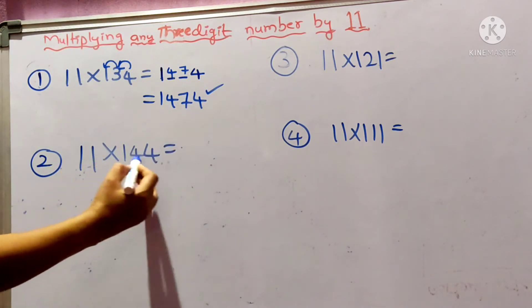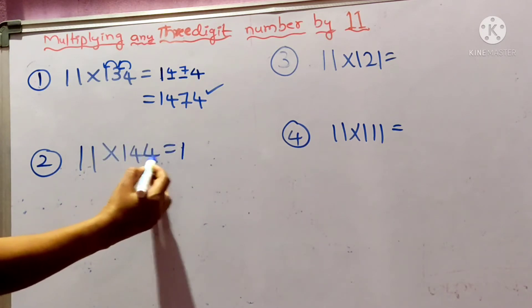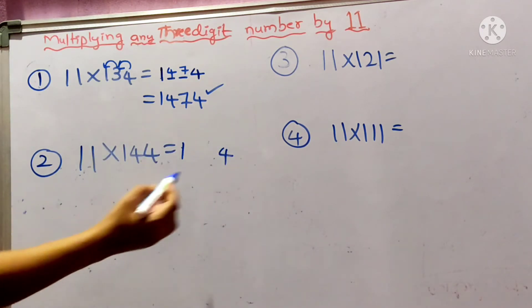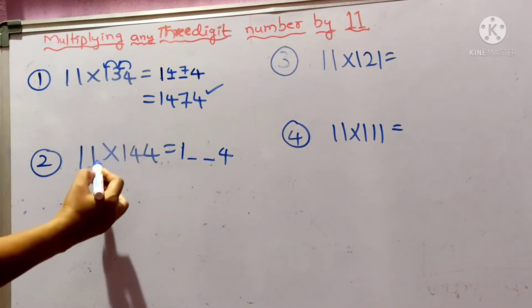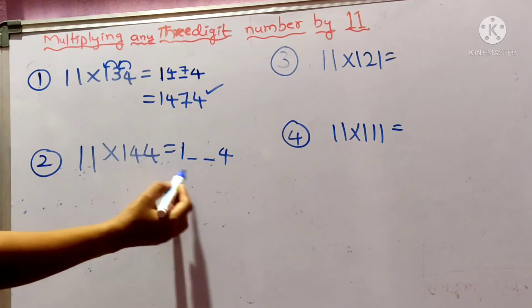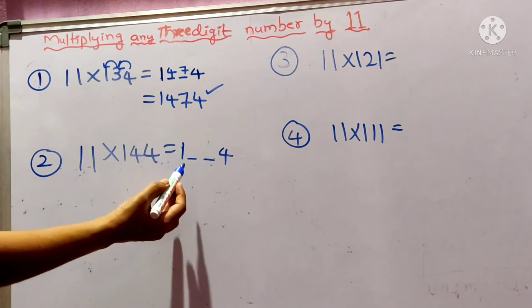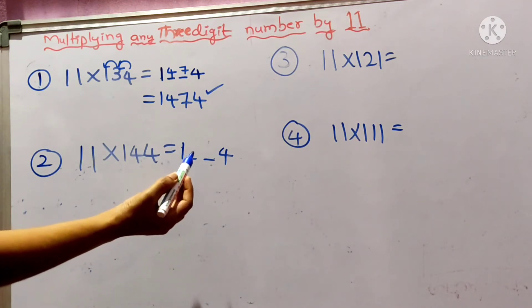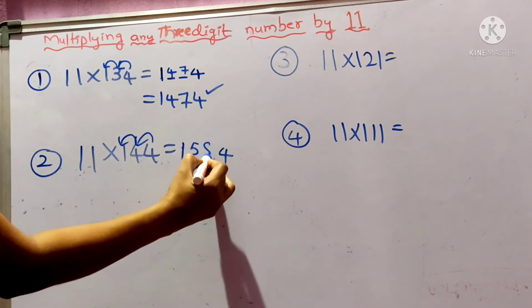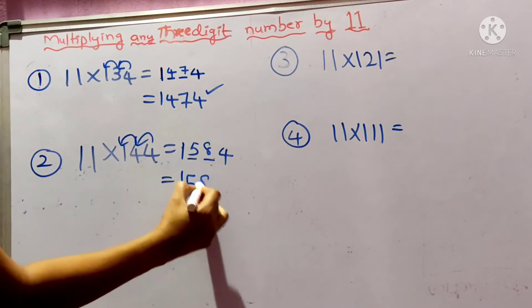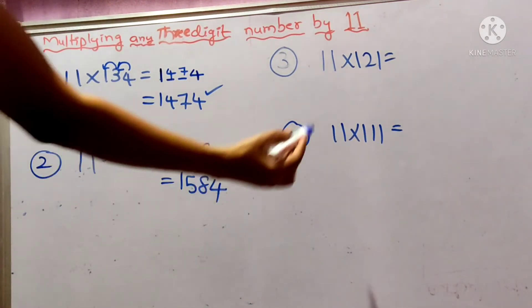Similarly, 11×144. In 144, first digit is 1, write as is. Last digit is 4, write as is. Now give two spaces between them. Earlier, in multiplying 11 with 2 digits, I gave one space. If you don't know that, go through my previous video. Now, 4+1 is 5, 4+4 is 8. Very simple, within a fraction of seconds you can write the answer. This answer is 1584.